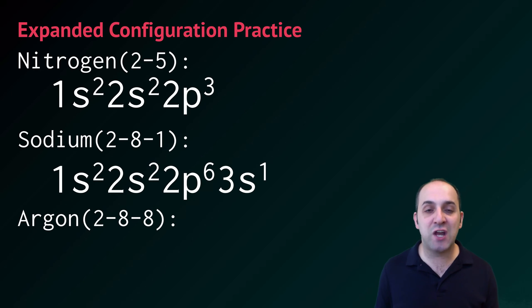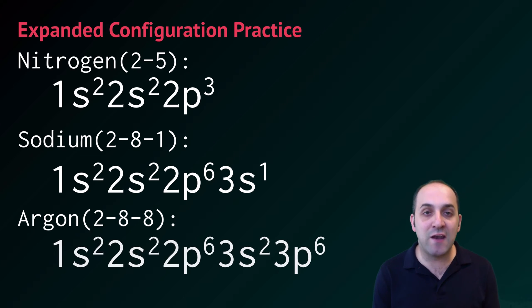Argon is 2-8-8, and so its expanded configuration looks like 1s2, 2s2, 2p6, 3s2, 3p6. I hope that makes sense. If it doesn't, take a moment and write down any questions that you have, and then let's move on.